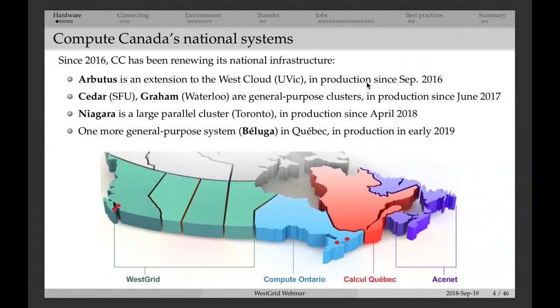Niagara is a new system at the University of Toronto, meant primarily for running large parallel jobs. The details of setup on Niagara are slightly different from those on Cedar and Graham. We also have one more system called Beluga coming online probably at the end of this year or early next year — it'll be in Quebec, and Beluga's setup will be very similar to Cedar and Graham, also a general-purpose computing cluster.